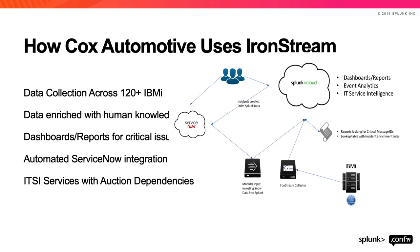The architecture looks like this: we collect data through IronStream, we've got a modular input collecting data from ServiceNow, and a lookup with message IDs, their priorities, and any additional knowledge information we want to add to incident descriptions. I'm also taking a hash of a couple different elements of the data to use as a correlation ID between ServiceNow and Splunk, so we're not creating a hundred incidents when we get a hundred of the same message ID from the same i-series in five minutes. Now the ticket just gets updated with the latest information and we don't have a storm of noisy incidents.